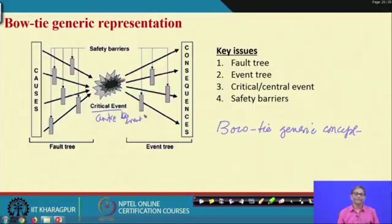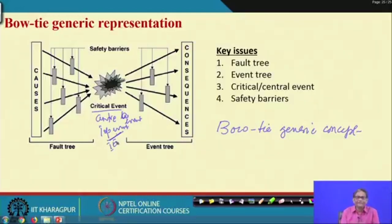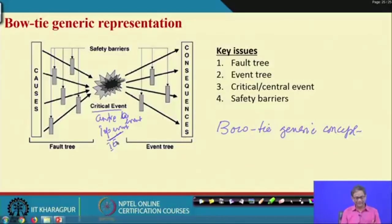What is this bow tie generic concept? There will be a center event or critical event. The center event with reference to fault tree is the top event; with reference to event tree it is basically the initiating event. Bow tie is a combination of fault tree and event tree - the left hand side is fault tree and right hand side is event tree.